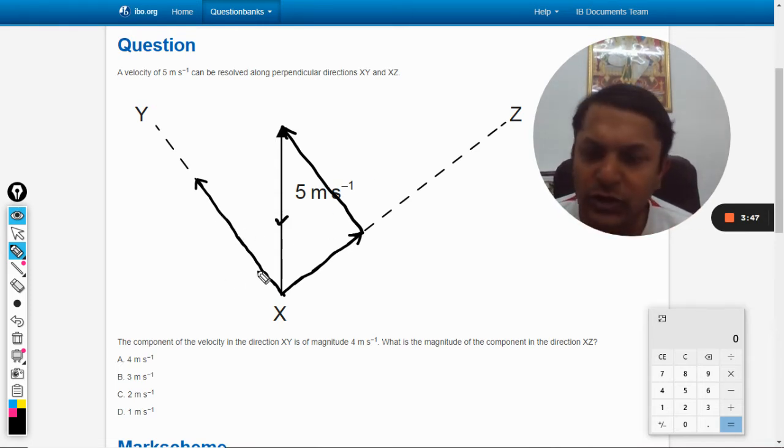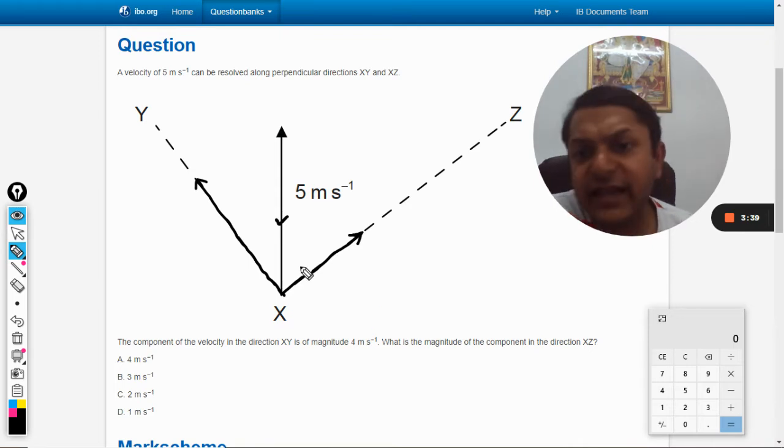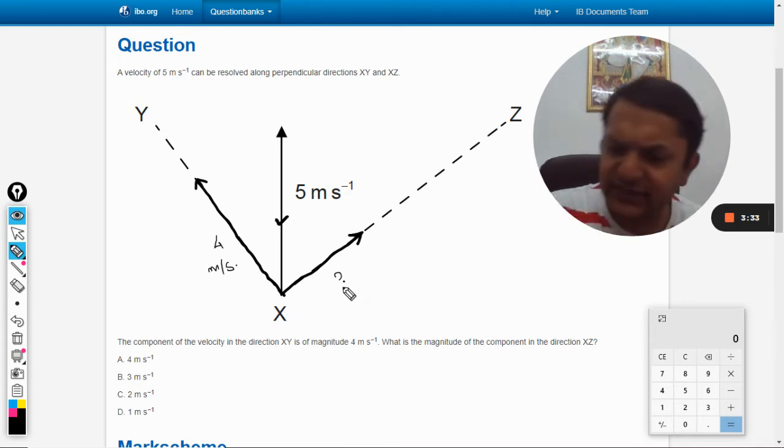Let me erase this thing, don't get confused. Now it is saying that this side is 4 meters per second, so you need to find this. Let us call this x.